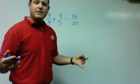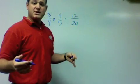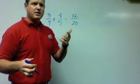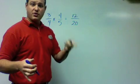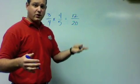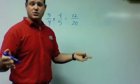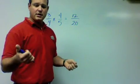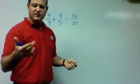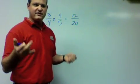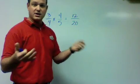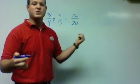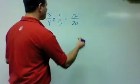What can I divide both twelve and twenty by? I can divide twelve by one, two, three, four, six, and twelve. I can divide twenty by one, two, four, five, ten, and twenty. The biggest one that they have in common is four, so that's what I'm going to divide them both by.